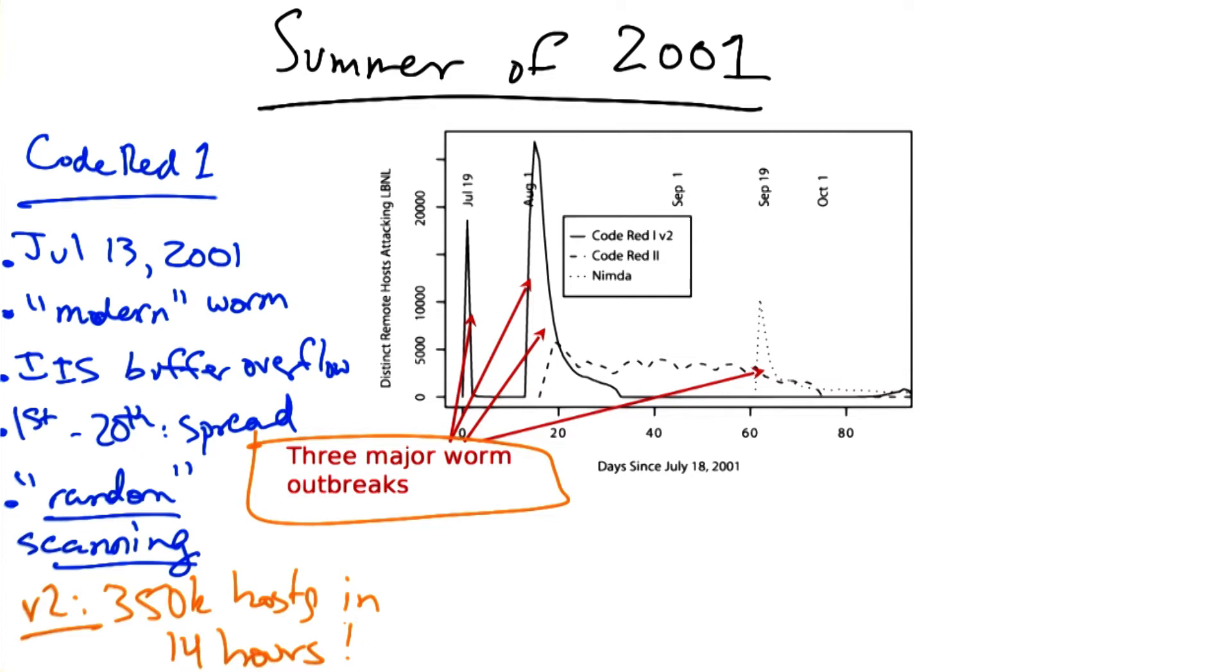By most estimates, that was the complete set of hosts running the vulnerable version of IIS on the entire internet. The payload of this worm was to mount a denial of service attack on whitehouse.gov, but a bug in the coding caused the worm to die on the 20th of each month. If the victim's clock was wrong, however, the worm would actually resurrect itself on the 1st.